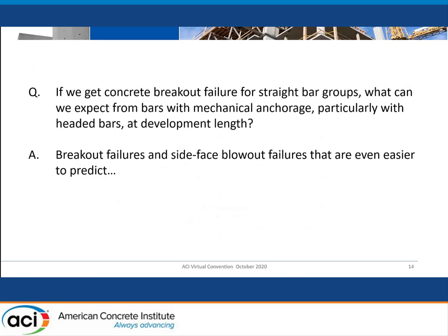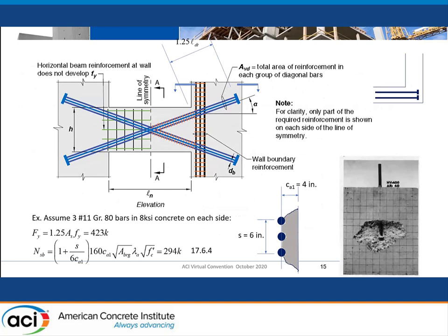That's straight bars. But if we think about headed bars and hooked bars, this problem just gets worse — that's what I tried to show you with my little calculation. There are other cases where this can be a problem, not just straight breakout, but what about side-face blowout? If you use headed bars for a coupling beam using the New Zealand detail and terminate all those headed bars at one location in the wall, and you haven't checked how much bursting force you're going to generate at those heads, you could get a rude surprise if your structure is actually subjected to a design level event. The side-face blowout capacity is nothing close to A_s times F_y.